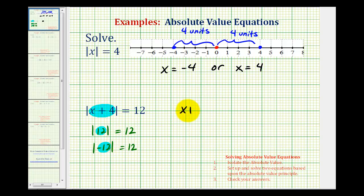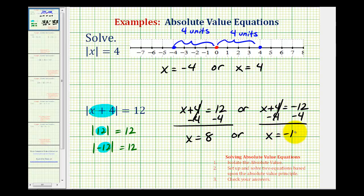So we'd have x plus 4 equals 12 or x plus 4 equals negative 12. Here we'll subtract 4 on both sides. Here we have x equals 8 or on the right side here we'll subtract 4 again, and now we have x equals negative 16.